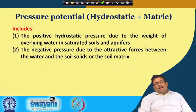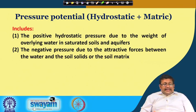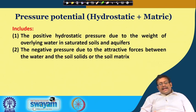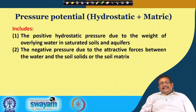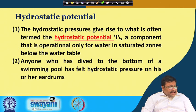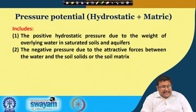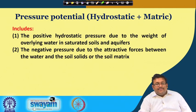The second one is called pressure potential. Pressure potential is basically the combination of both hydrostatic and matric potential. It includes the positive hydrostatic pressure due to the weight of overlying water in saturated soil and aquifers, and the negative pressure due to the attractive forces between the water and the soil solids of the soil matrix. The first part shows hydrostatic potential and the second shows matric potential.